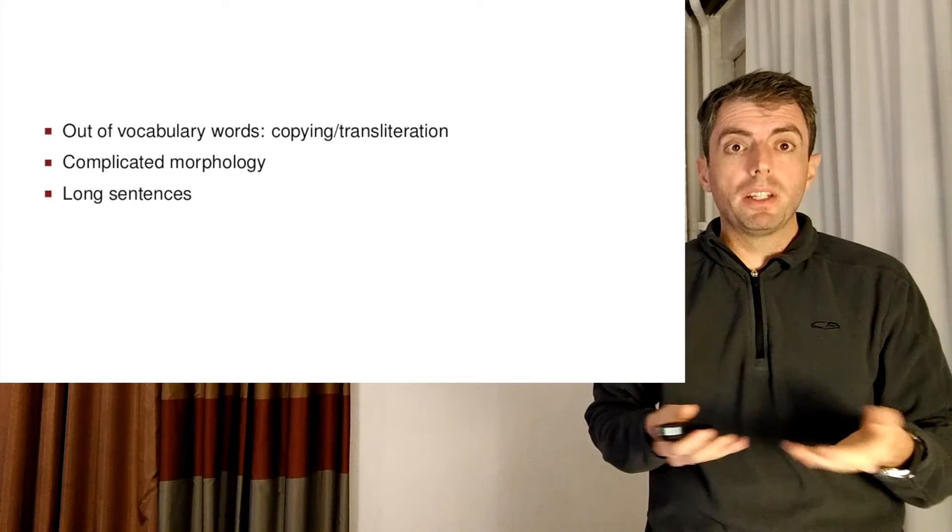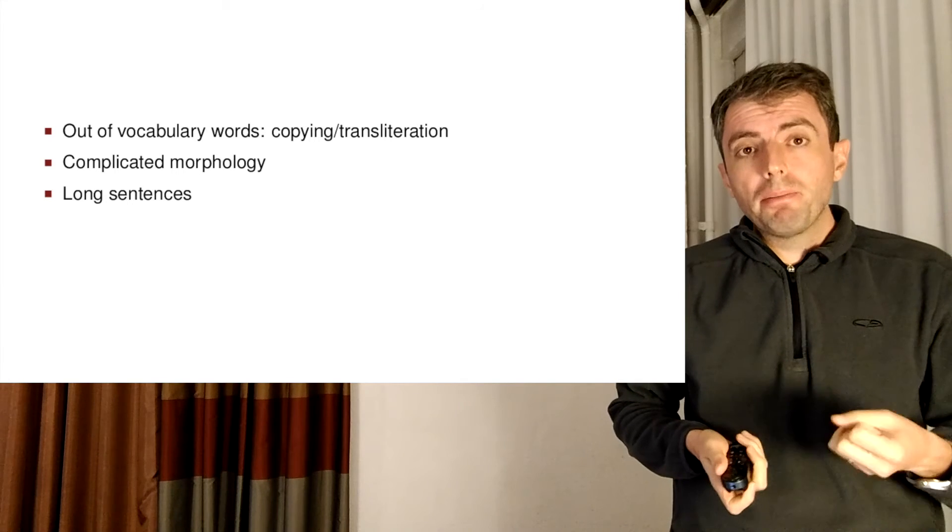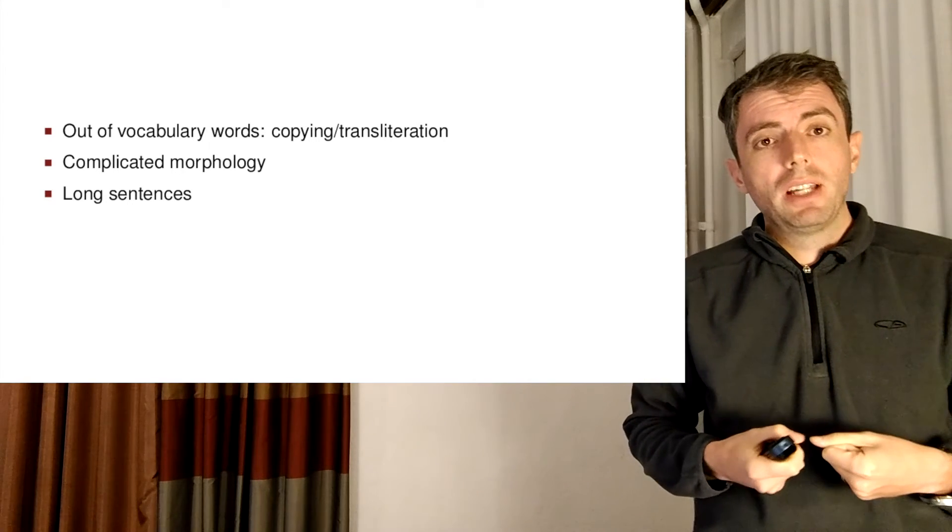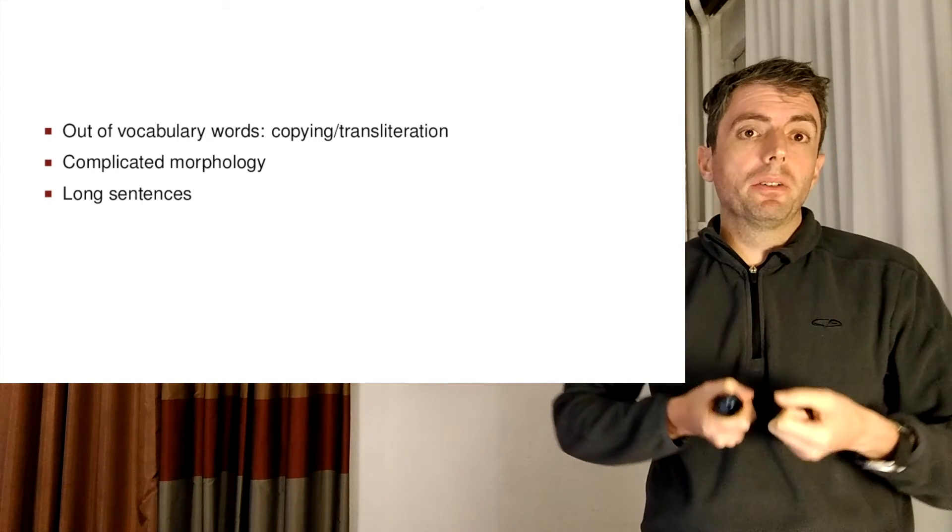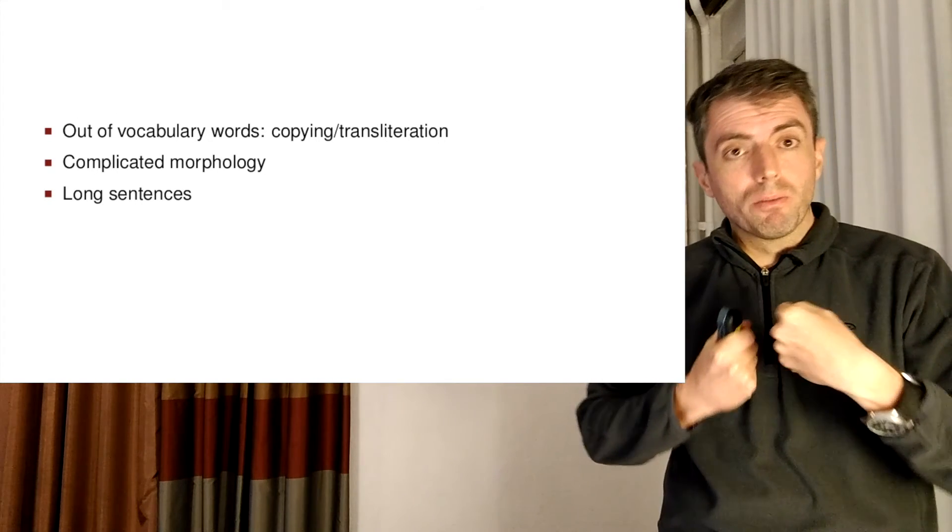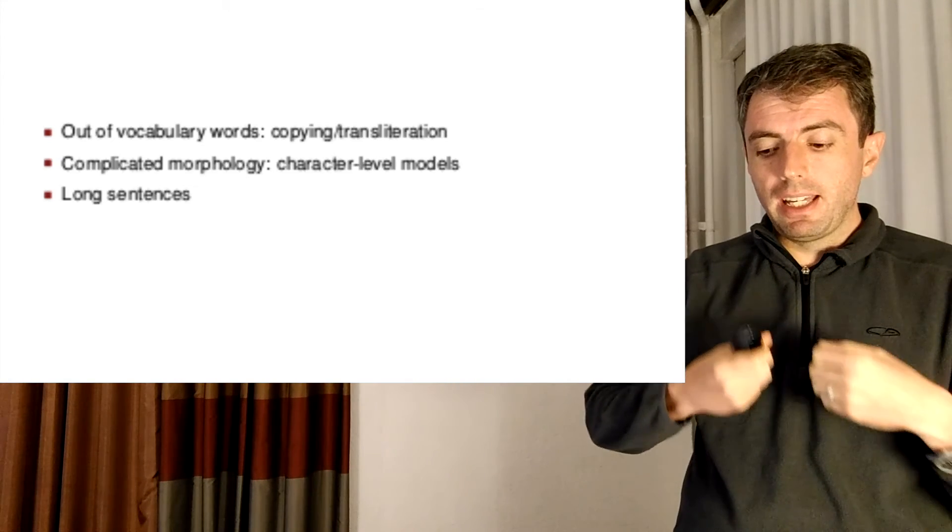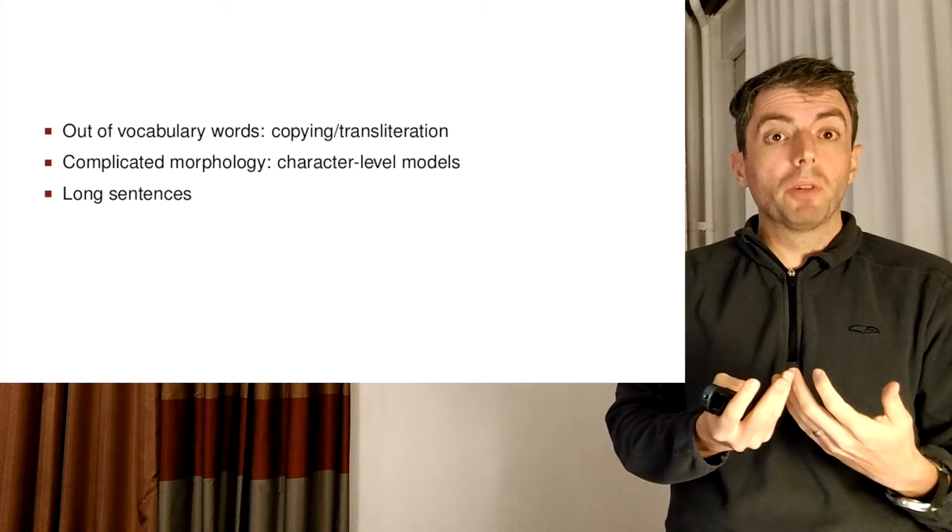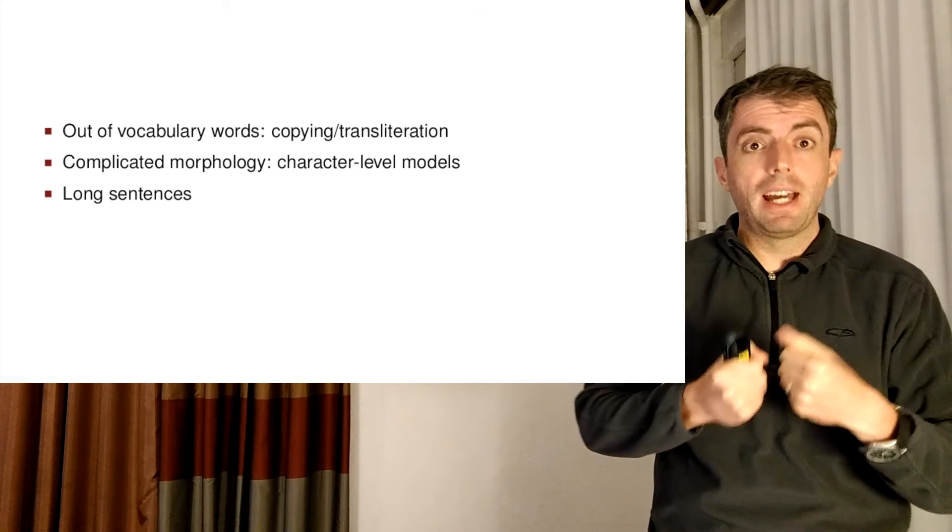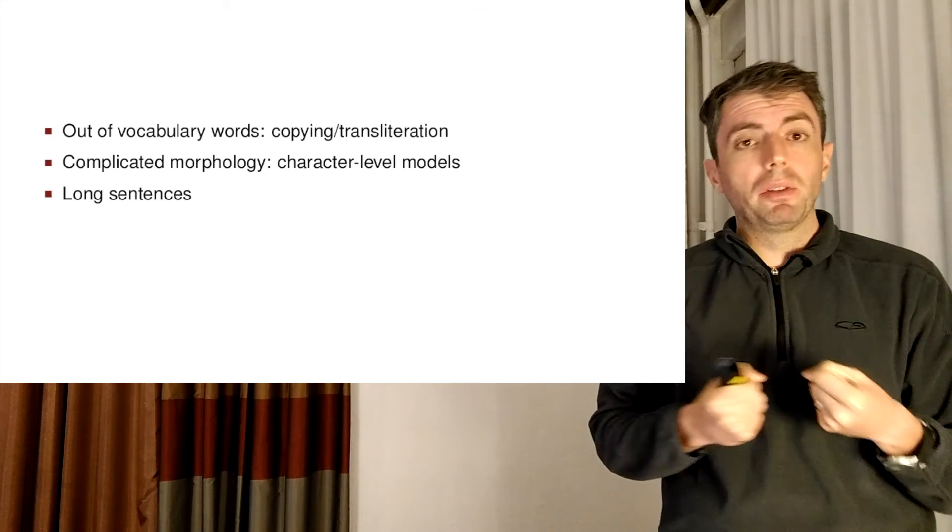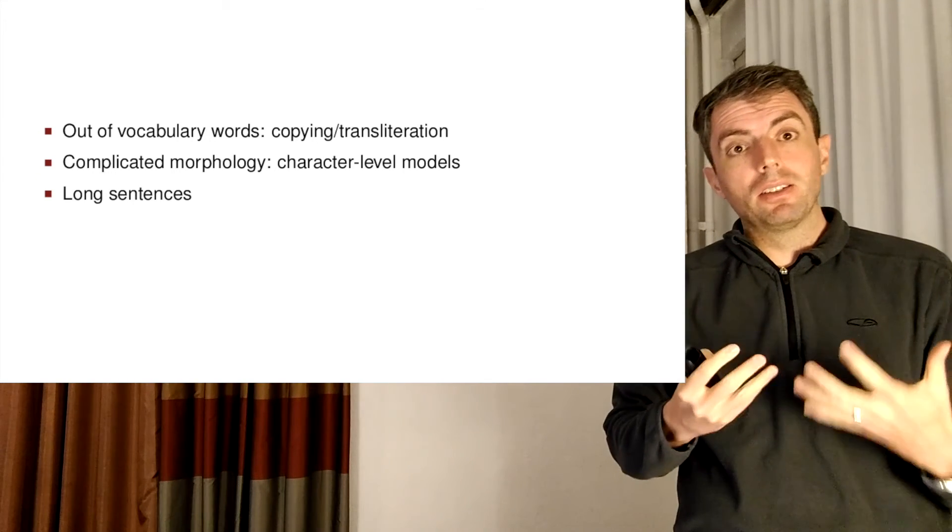For complicated morphology, the softmax that you're doing on the decoder becomes overwhelmed, and it doesn't know the right output word to generate. And so here you need to have something like a character level model to encode the morphology of the word directly, rather than treating the words as embeddings. And so you need to be able to figure out how the morphology of a single word will affect the translation directly.